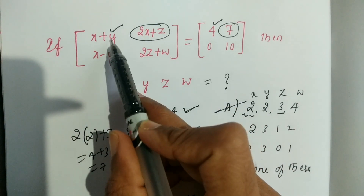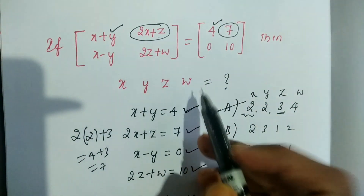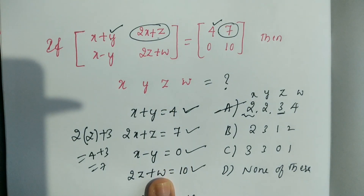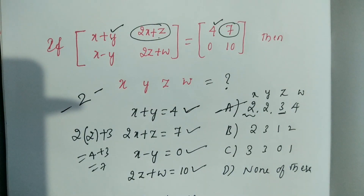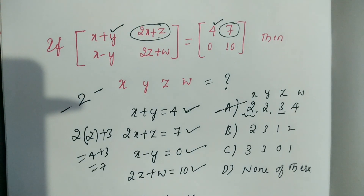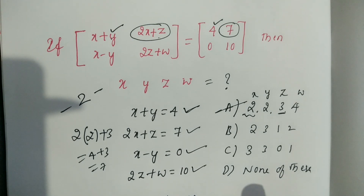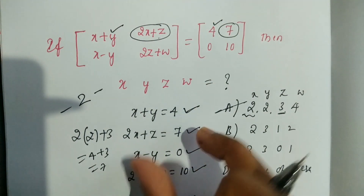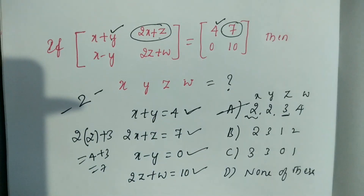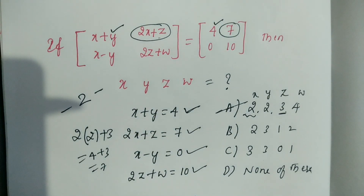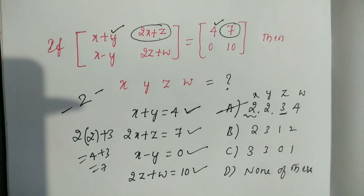So the first entry equals the second entry — that is the key principle. We form equations and whichever option satisfies all equations, that is the answer. This is a 2-marks question and it takes less than 1 minute to solve. For these types of questions, just equate the entries, form the equations, and substitute the options. It becomes very easy.